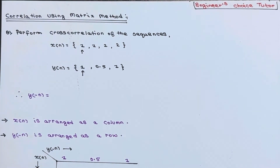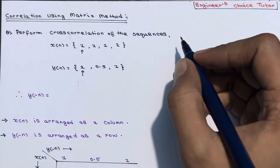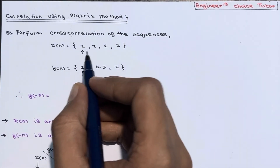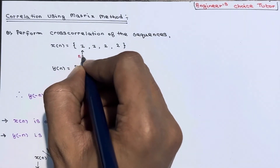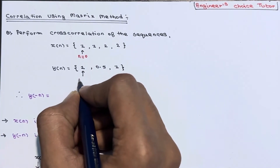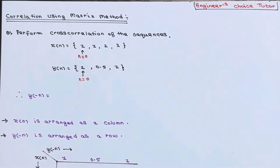In this lecture we will talk about correlation using the matrix method. The question is: perform cross-correlation of two sequences, where x(n) is given as {1, 1, 2, 2} starting at n=0, and y(n) is given as {1, 0.5, 1} starting at n=0. We have already calculated the initial and final values of m in the last lectures, so let's do that part first.